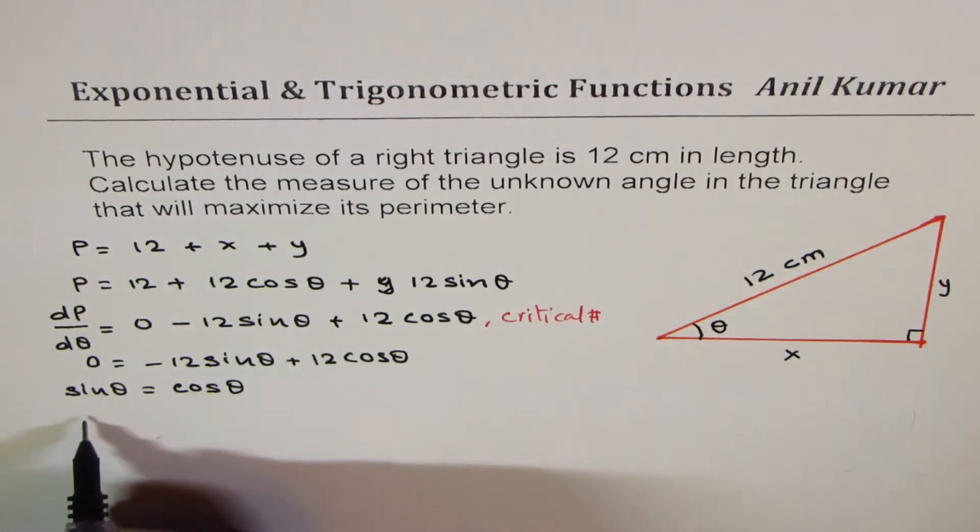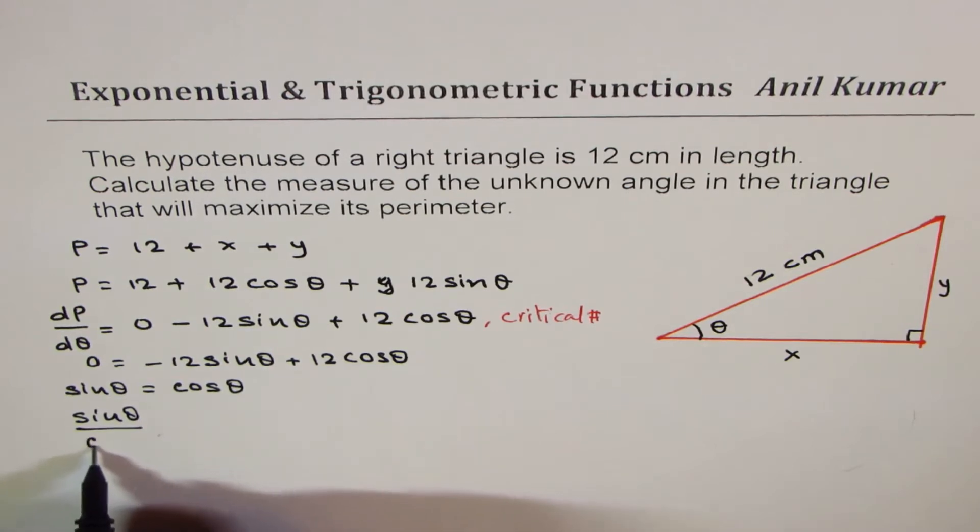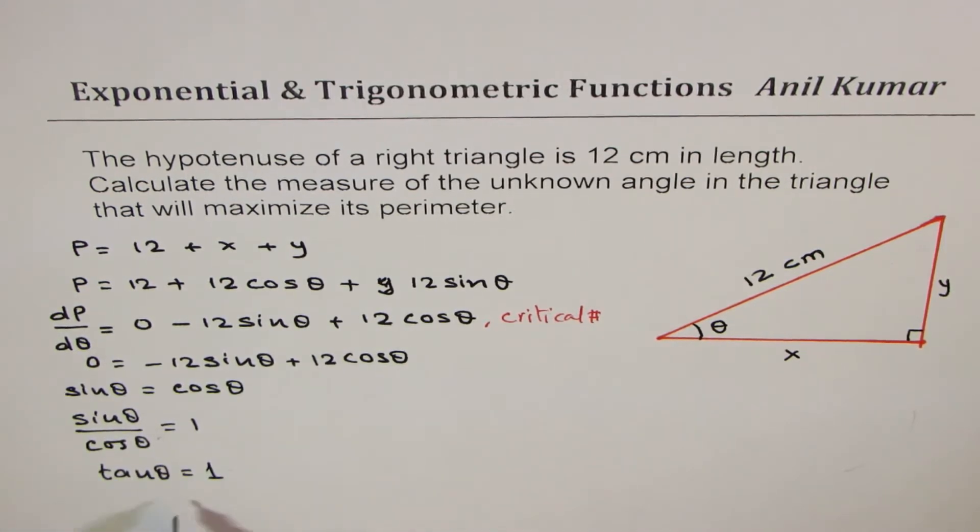Divided by cos θ equals to 1, which is tan θ equals to 1. And from here you can get θ as tan inverse of 1, which is π/4, right? So you get π/4 as the option.